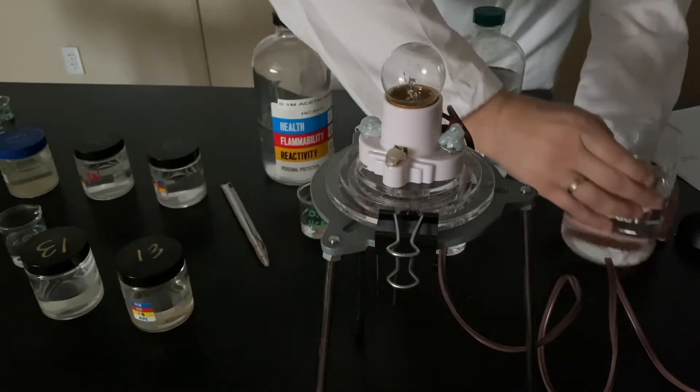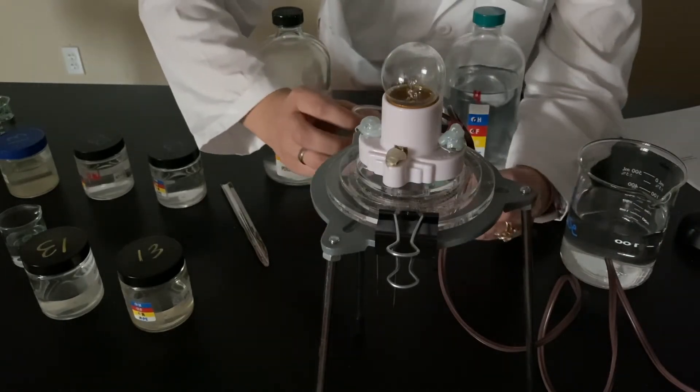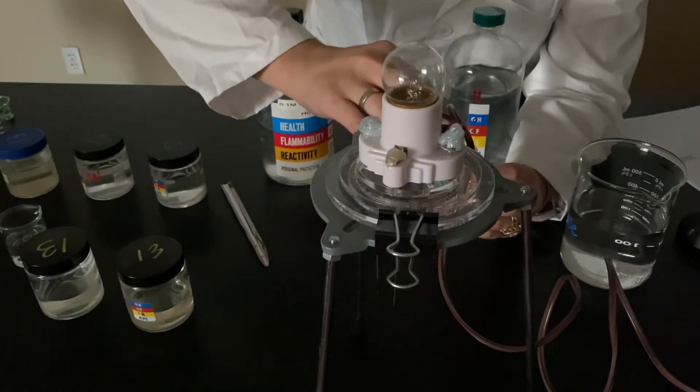D.I. rinse. And then we're going to mix them together, see if there's a double replacement reaction that occurs. So I'm going to pour the acetic acid into the ammonium hydroxide.